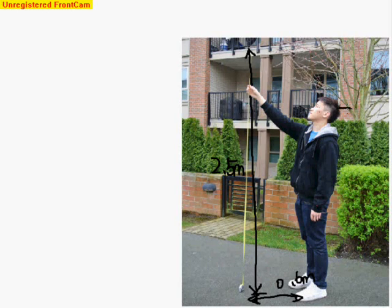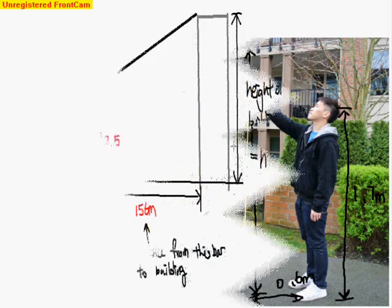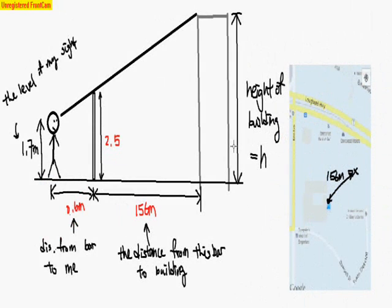From my eye to the ground is around 1.7 meters. And right now we have all the information set. From Google Map I searched up my location to the building, it's around 156 meters. So just use the red color over here to write down all the new information. The bar is around 2.5 meters tall, the distance from the bar to my position is 0.6, my eyesight is 1.7 meters.